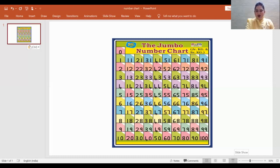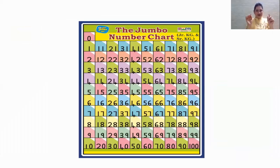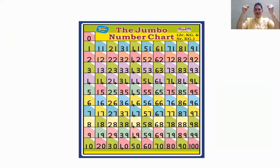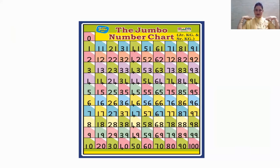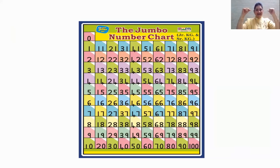So children, let us all start from zero. 0, 1, 2, 3, 4, 5, 6, 7, 8, 9, 10, 11, 12, 13, 14, 15, 16, 17, 18, 19, 20.